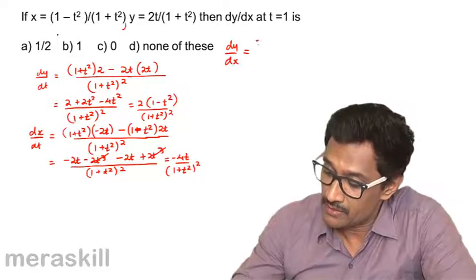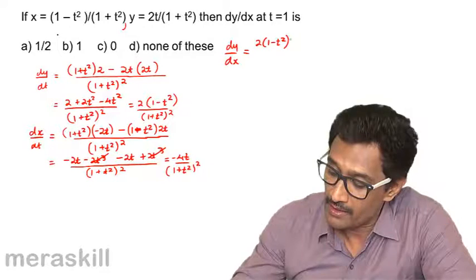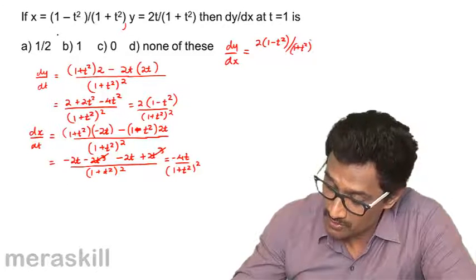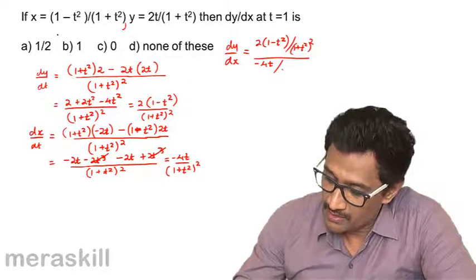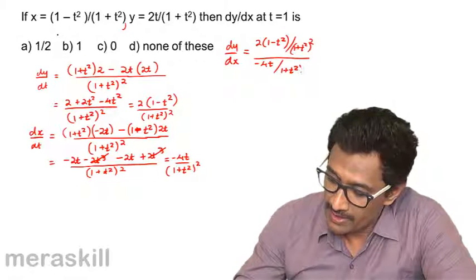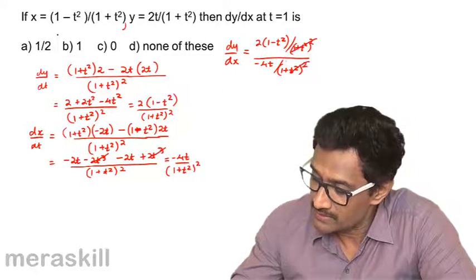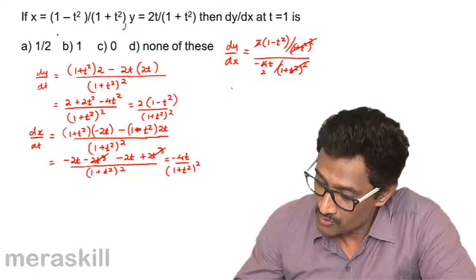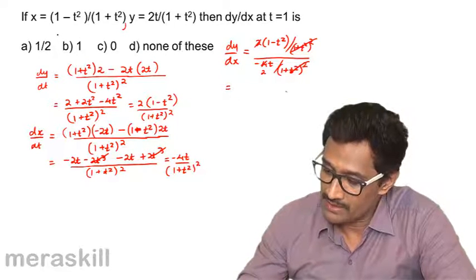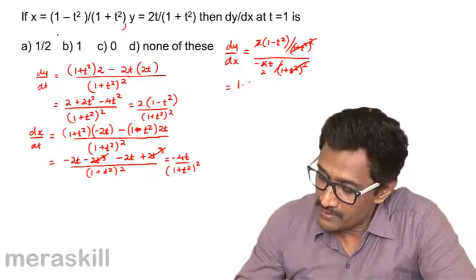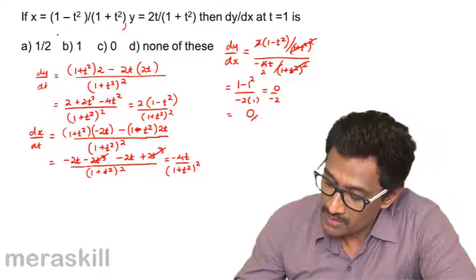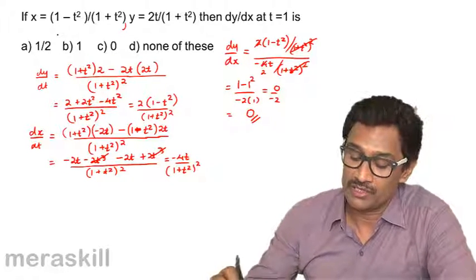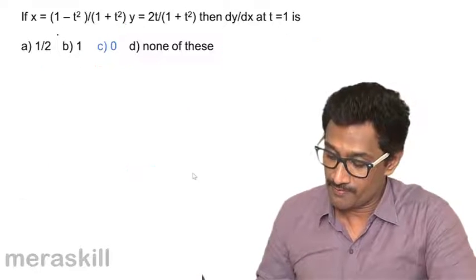So dy/dx = [2(1 - t²) / (1 + t²)²] / [-4t / (1 + t²)²]. The (1 + t²)² terms cancel, giving dy/dx = (1 - t²) / (-2t). Substituting t = 1: (1 - 1) / (-2) = 0 / (-2) = 0. So the slope of the tangent at that point is 0.